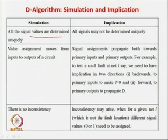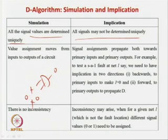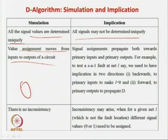The key difference from simulation is that in simulation there is no inconsistency — given inputs, there is a unique output. In implication, lot of inconsistency can arise: while propagating the fault value you may need to assign 1 to a net, but justification requires assigning 0 to the same net. In simulation, the value assignment moves unidirectionally from input to output; in implication, it flows both ways — forward for propagation and backward for justification.